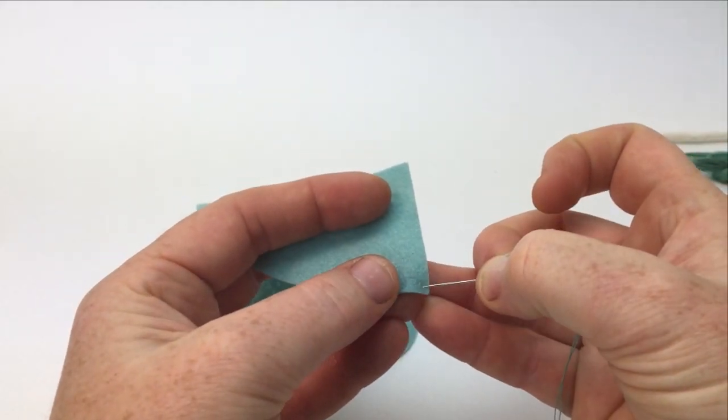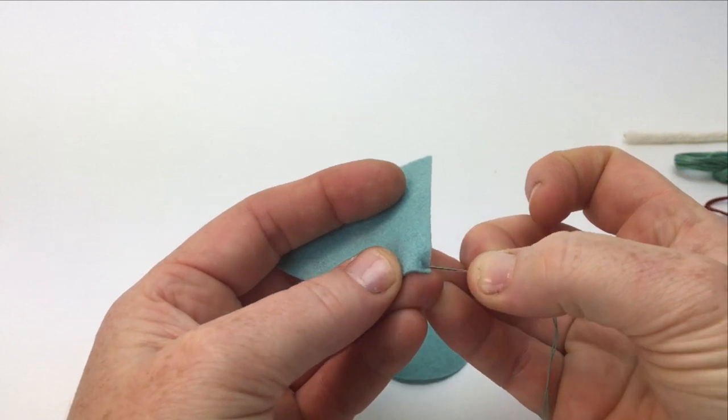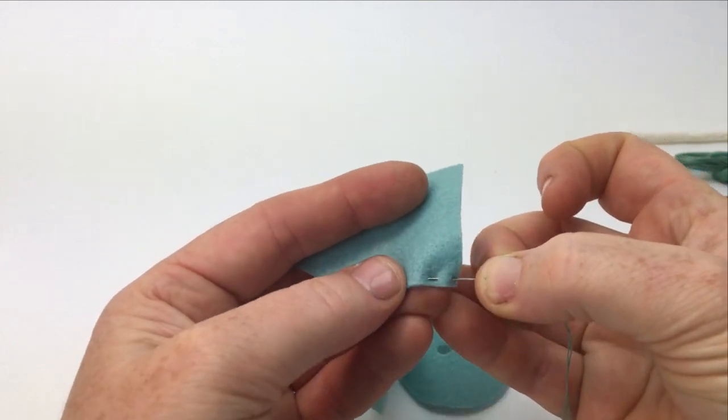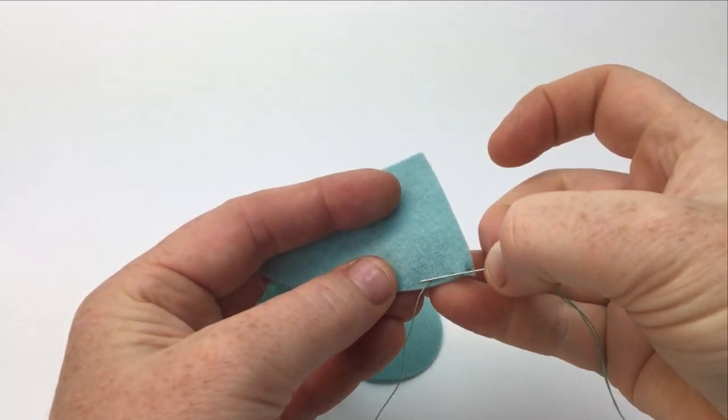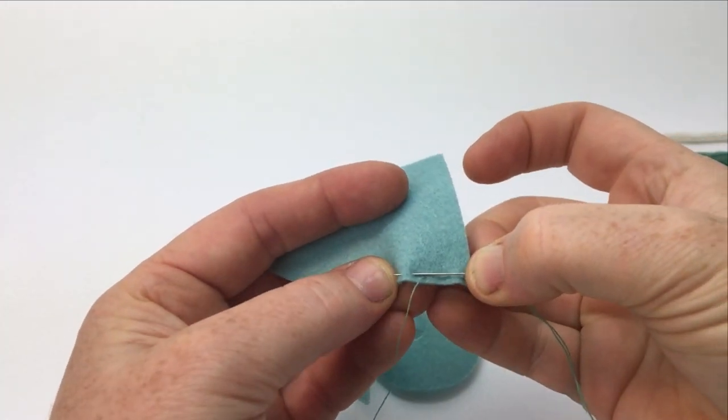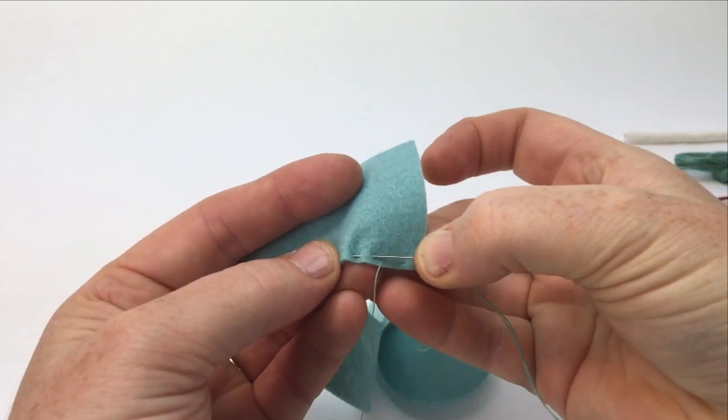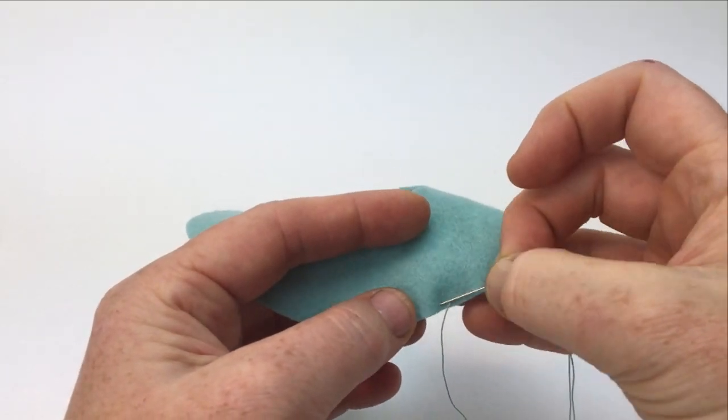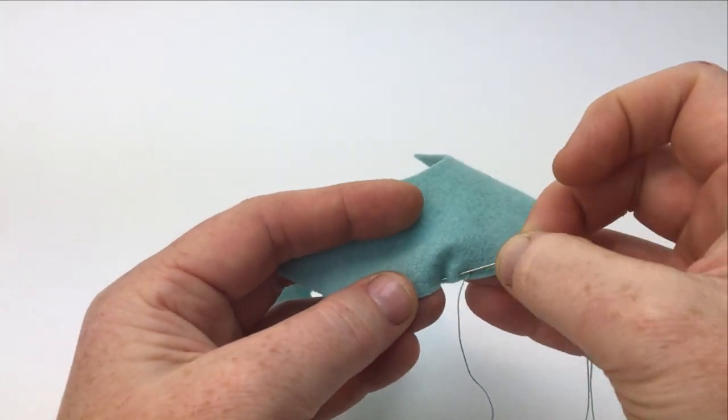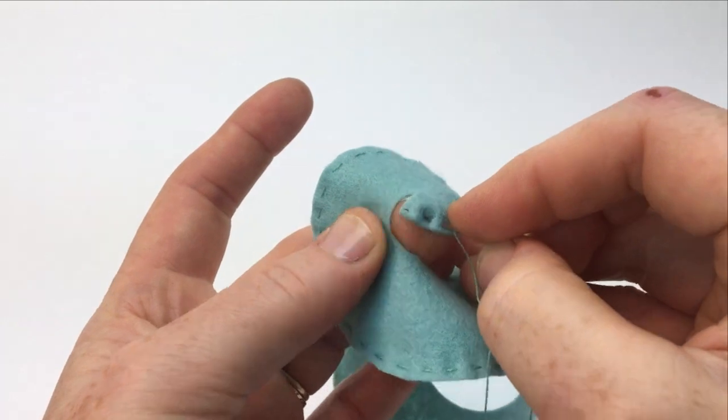Now, we're ready to make a running stitch around the outer edge of the shell that spirals into its center. The running stitch is worked by rocking the needle in and out of the fabric to create a dashed line. Continue working the running stitch about 1/16th of an inch from the edge of the felt until you've reached the center of the spiral.